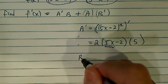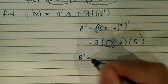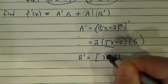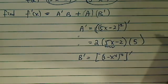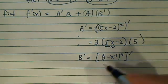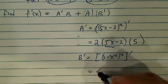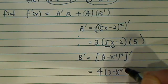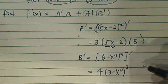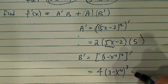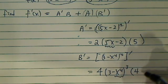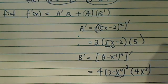Let's go on to the next one. B prime is equal to 3 minus x to the 4th — we need to take the derivative of this. So since it's a power, we're going to do 4 times (3 minus x to the 4th) to the 3rd — that's taking care of the first shell. The second shell, that's this part, and the derivative of that is 4 times 3x cubed.